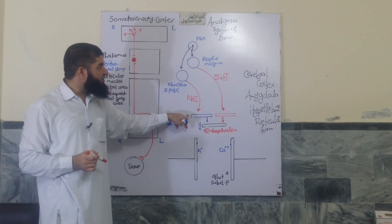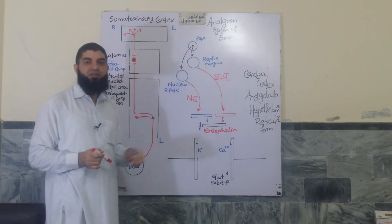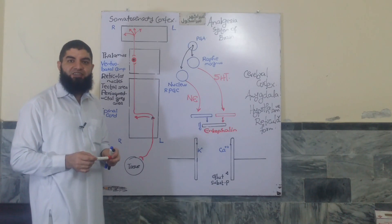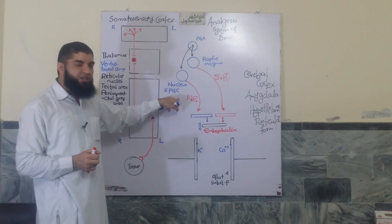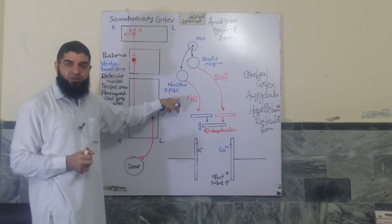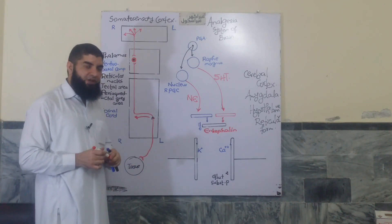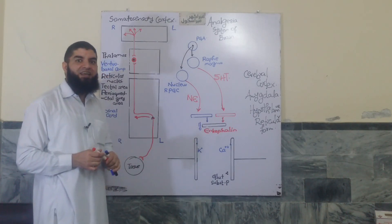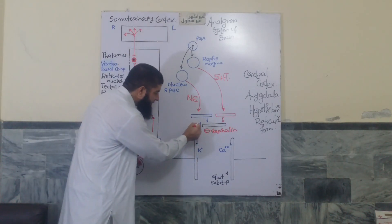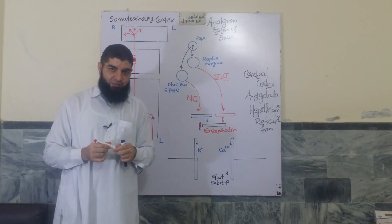And these fibers are unique. Those from the nucleus raphe magnus secrete serotonin, and we have a fancy word, 5-hydroxytryptamine for serotonin. While those fibers originating in the nucleus reticularis paragigantocellularis secrete norepinephrine at their nerve endings. Here in the spinal cord, they synapse on interneurons and cause them to secrete what we call enkephalin.